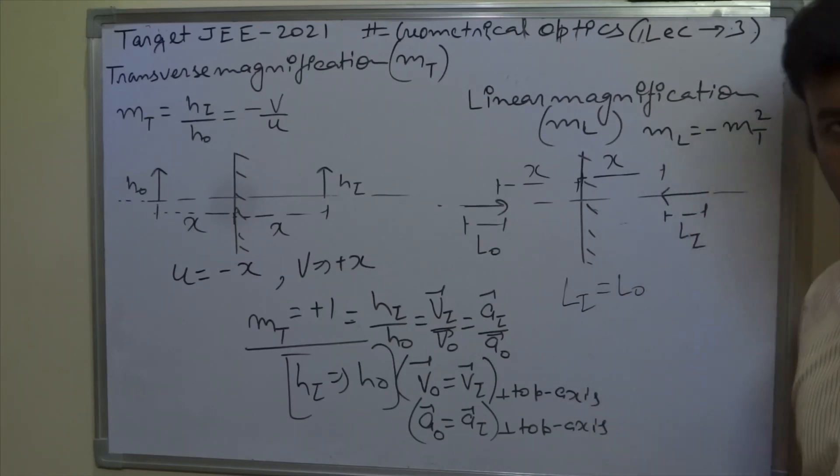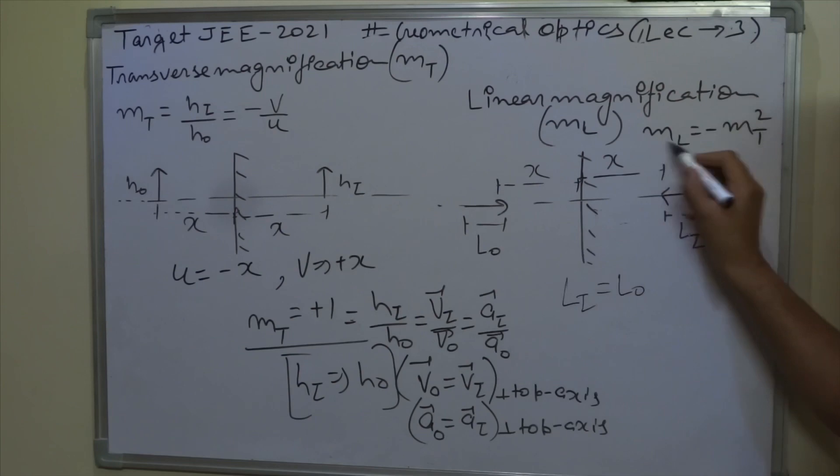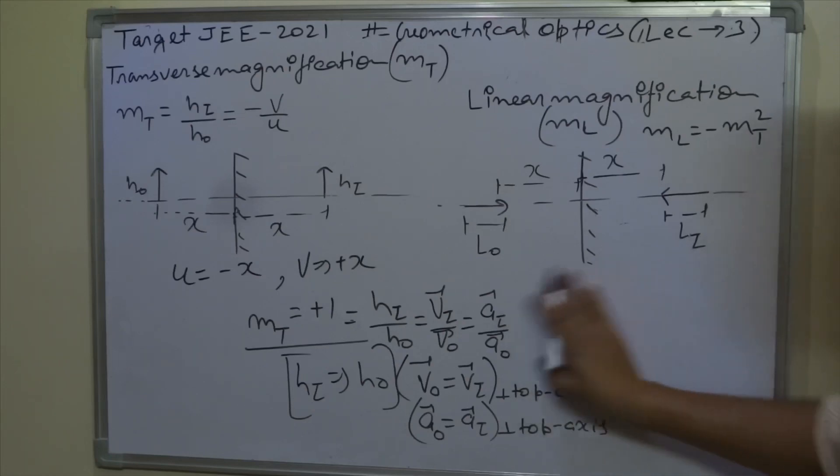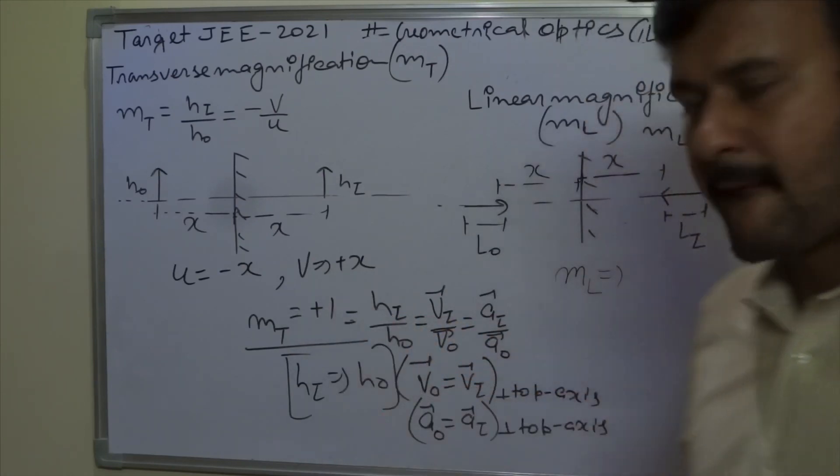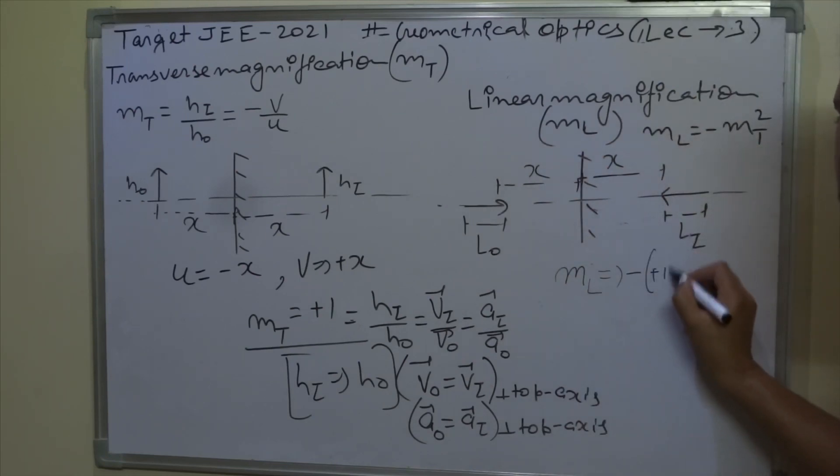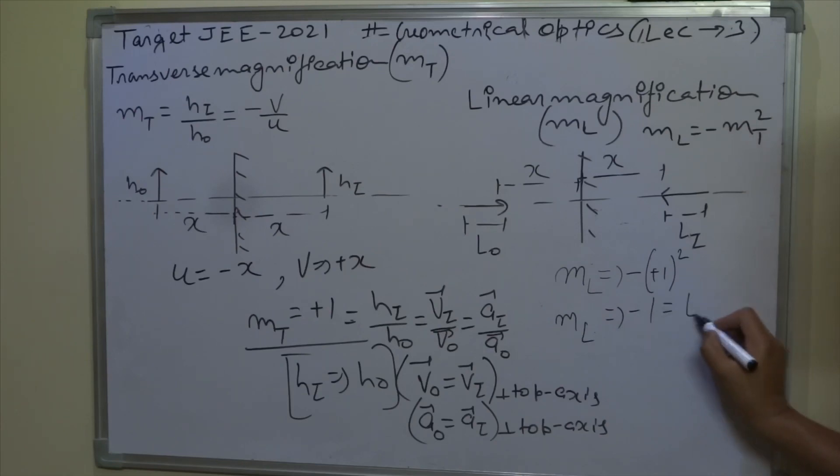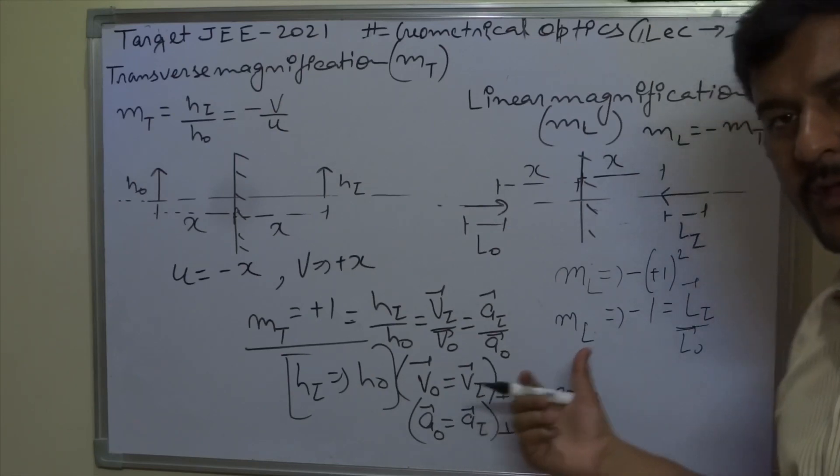And in fact, I will tell you that in plane mirror, the m_L is linear magnification, which is minus of transverse magnification squared. So if I write linear magnification, then linear magnification is equal to transverse magnification squared, which is minus of plus 1 squared, which means minus 1. So linear magnification is minus 1. Now this means two meanings. Actually, length of image upon length of object. This means minus 1.